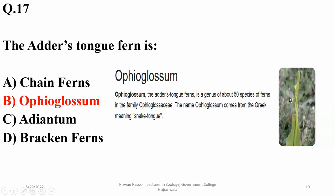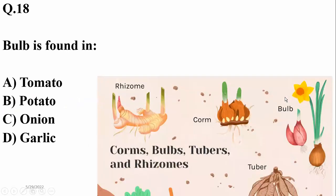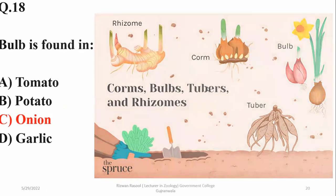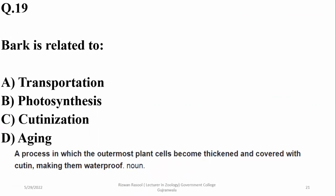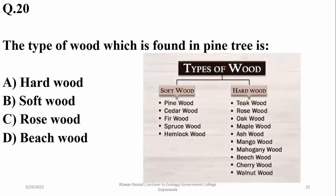Question eighteen: bulbs are found in bulb-type structures such as onion and garlic, so the right option is C (Charlie). Question nineteen: bark is related to the hardening process related to suberization, so the right option is C (Charlie). Question twenty: the type of wood found in pine trees is softwood. Hardwood has other examples, but pine trees are softwood. So the right option is the last option for question twenty.